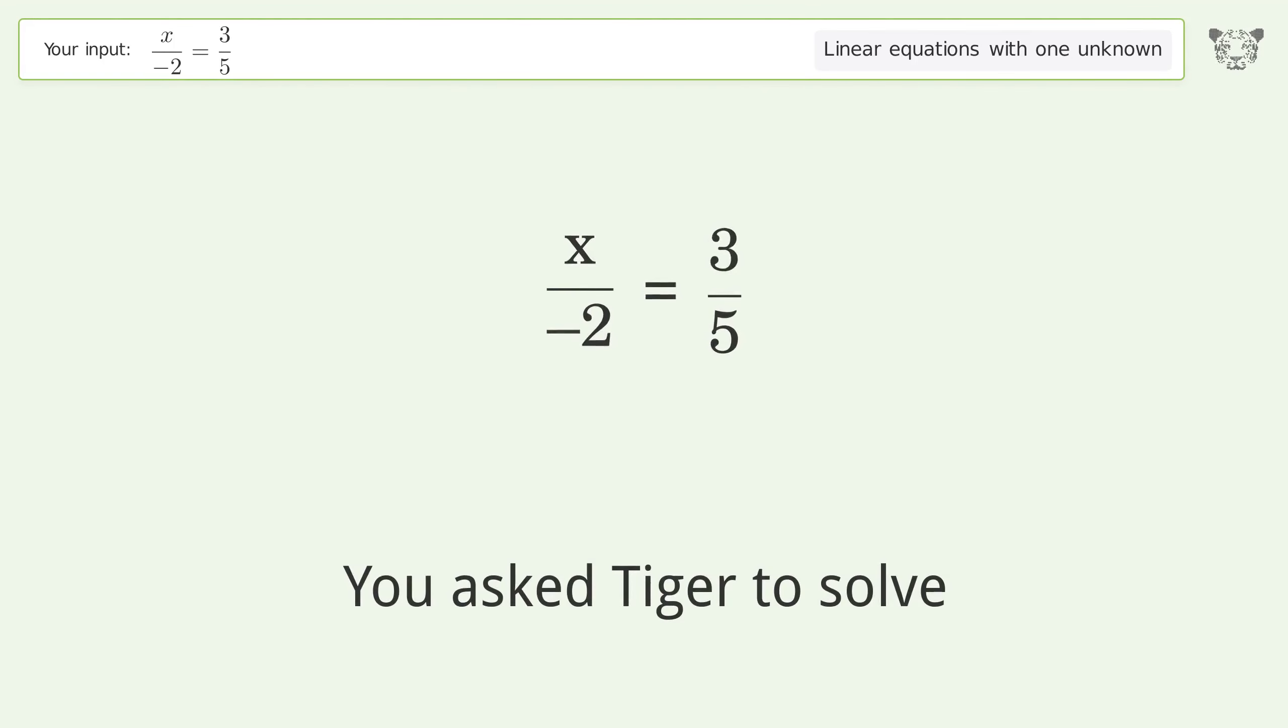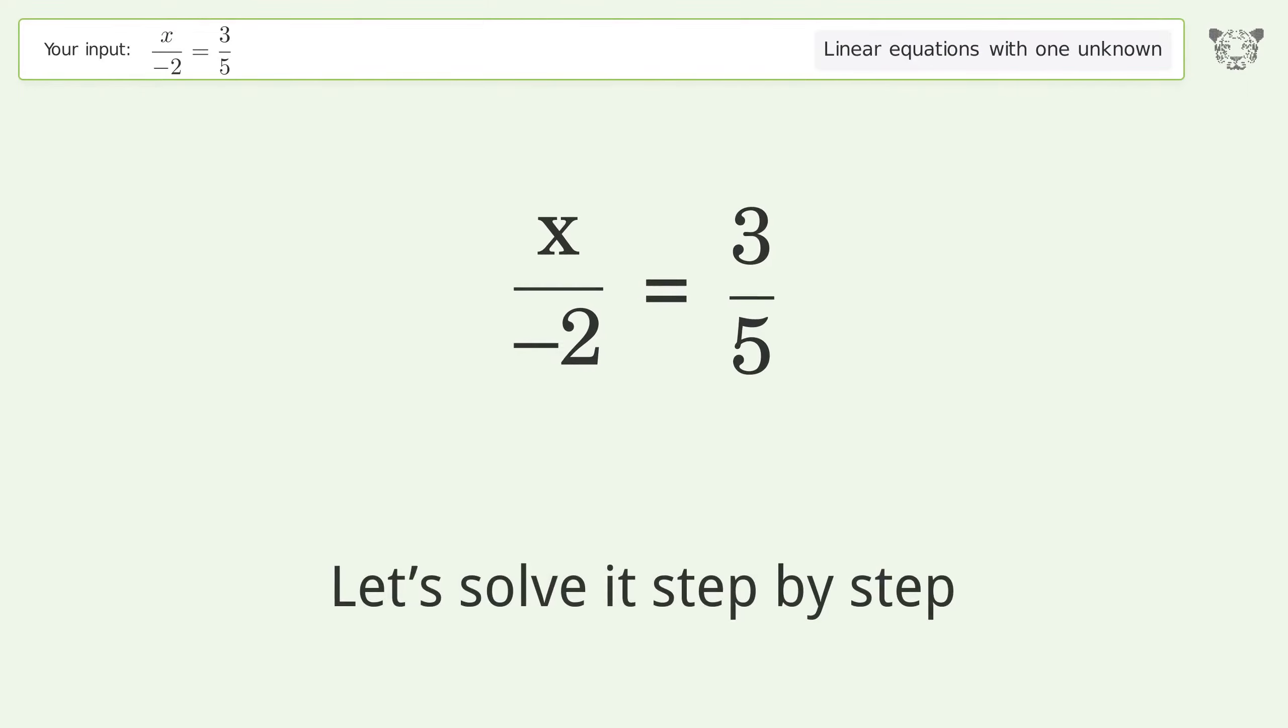You asked Tiger to solve this. It deals with linear equations with one unknown. The final result is x equals negative 6 over 5. Let's solve it step by step.